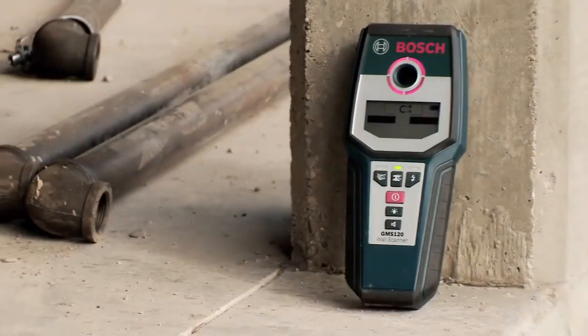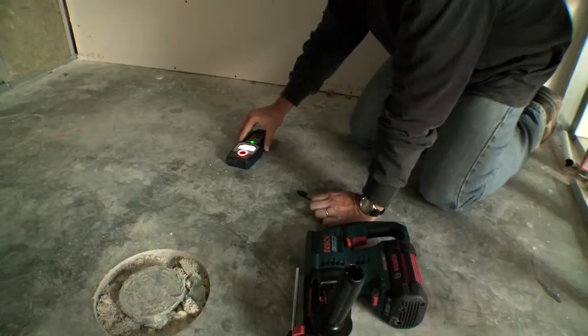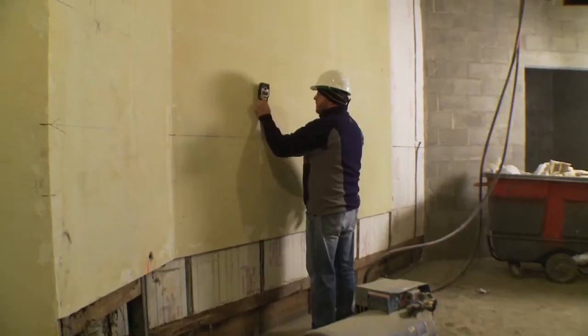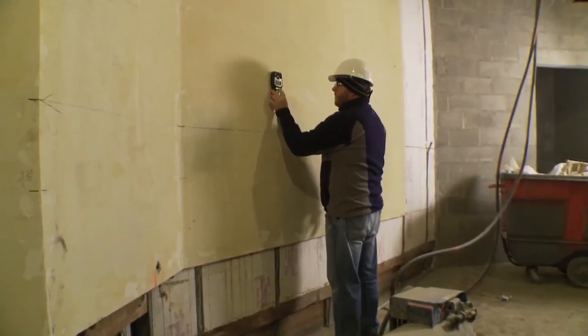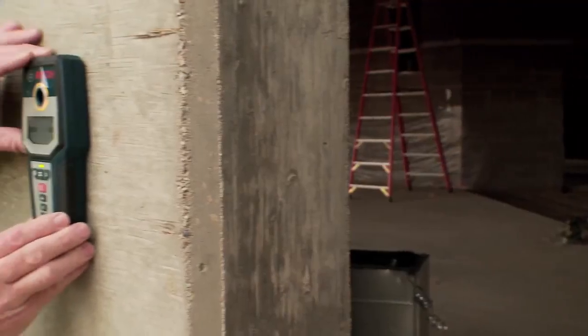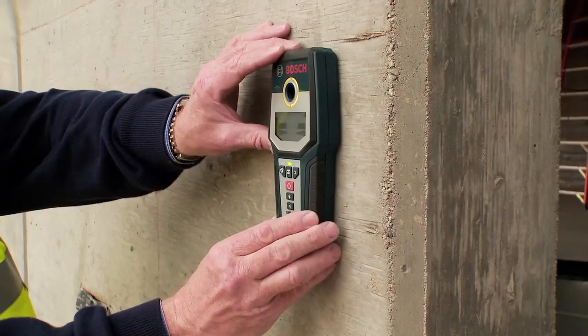This is the Bosch GMS120 Wall Scanner that is used for interior detection of wood, metal, and electrical wires in floors and walls. The GMS120 is a single tool that can detect and locate wood studs, metal objects, and electrical wiring in any wall or floor at up to 4 and 3 quarters inch deep, depending on wall material type.